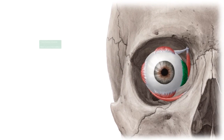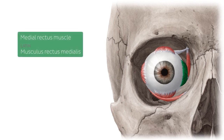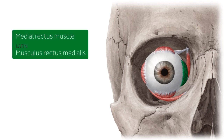The medial rectus muscle is one of the six extraocular muscles that control eye movements. This muscle is located on the medial aspect of the eyeball. It is also the largest of the extraocular muscles, and stronger than its antagonistic pairing, the lateral rectus muscle.